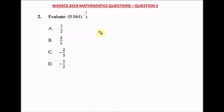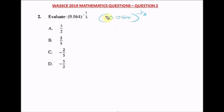Question two of the WAEC 2019 mathematics past question. Evaluate 0.0064 raised to the power minus one over three. We simplify 0.0064 by shifting the decimal place three positions, giving 64 divided by 1000, where 1000 is 10 raised to the power three. So we have 64 divided by 1000 with a negative power of one over three.